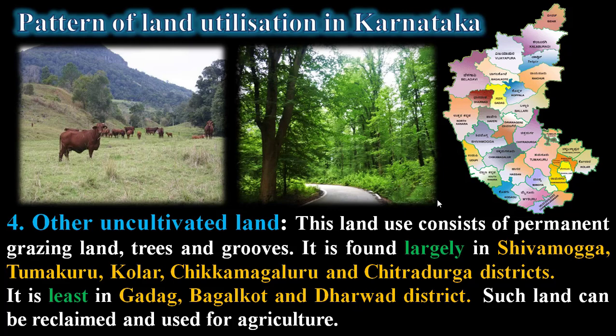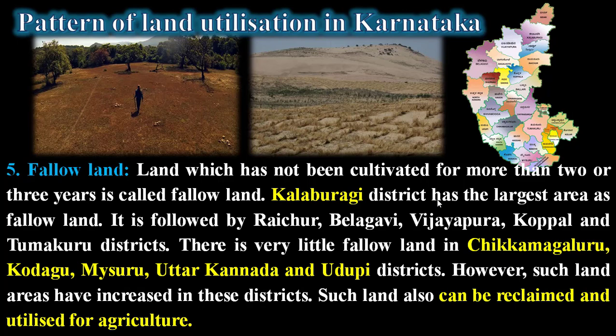The last pattern of land utilization is fallow land — land which has not been cultivated for more than two or three years is called fallow land. Kalaburagi district has the largest area as fallow land, followed by Raichur, Vijayapura, Koppal, and Tumkuru districts. There is very little fallow land in Chikkamagaluru, Kodagu, Mysuru, Uttara Kannada, and Udupi districts. However, such land areas have increased in these districts. Such land can also be reclaimed and utilized for agriculture.